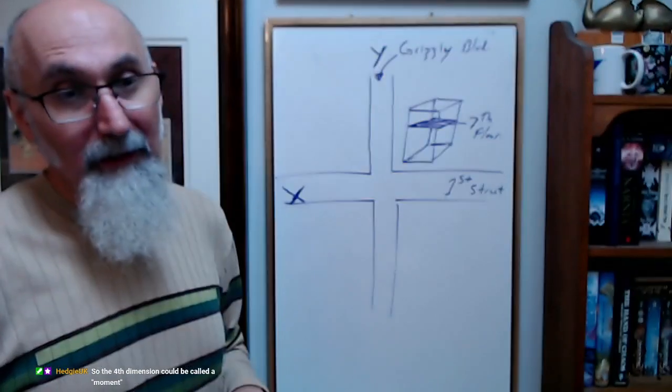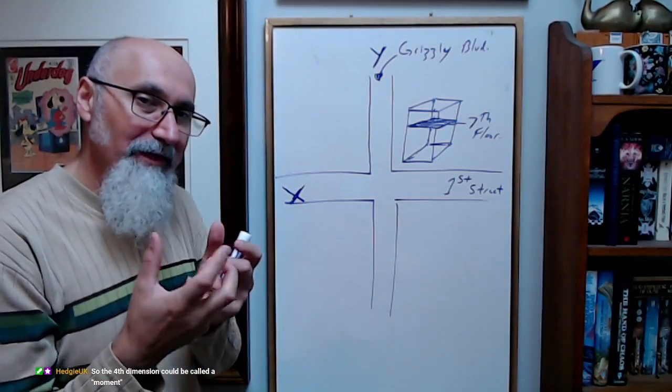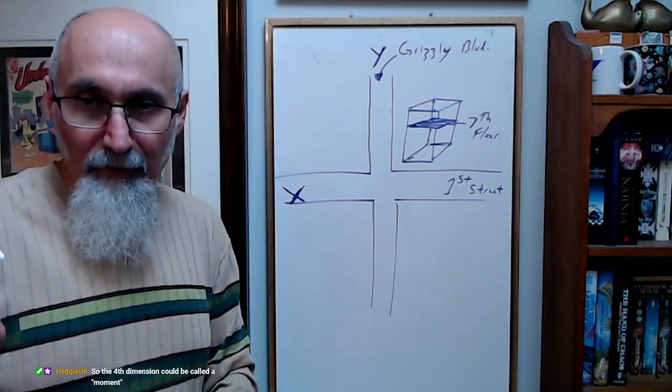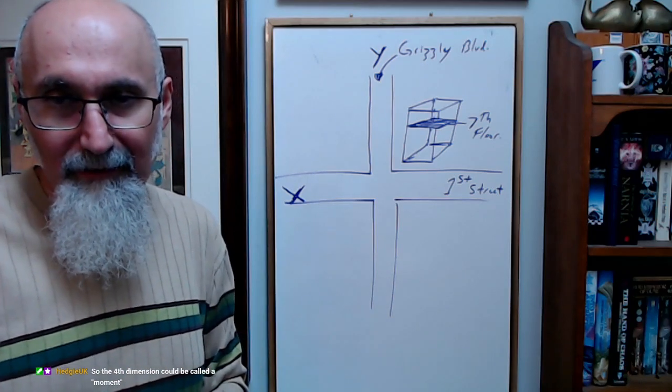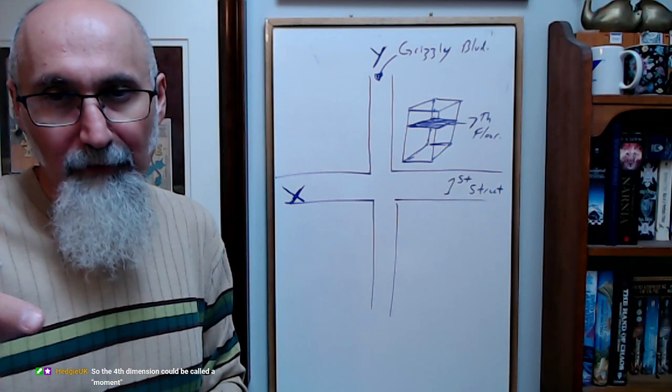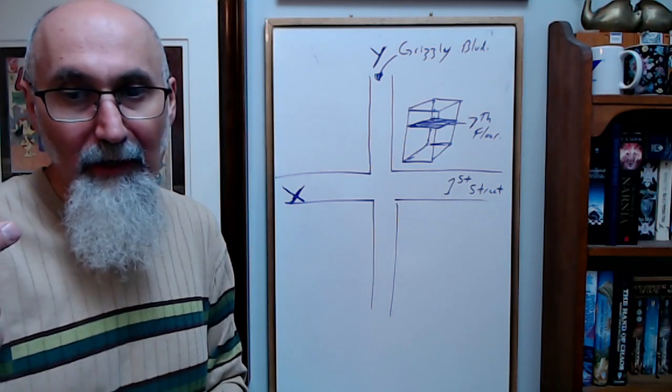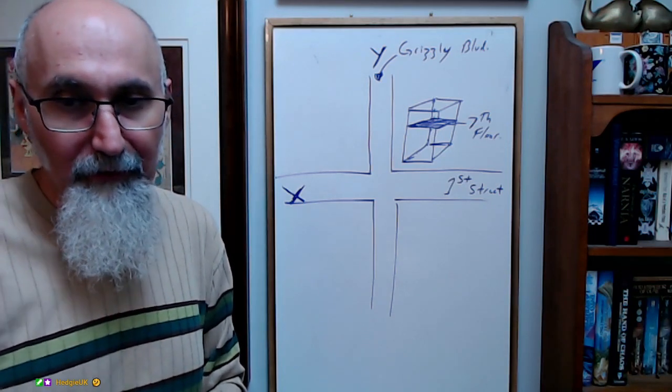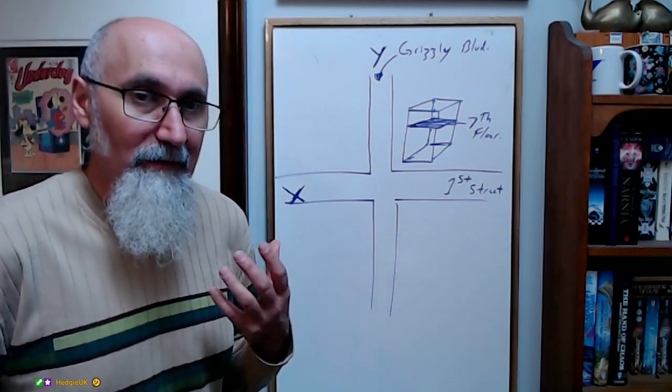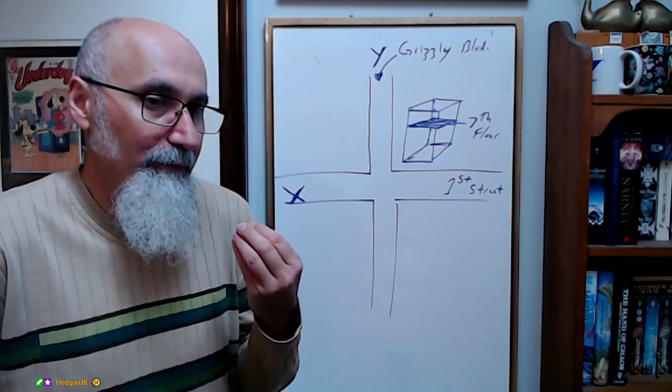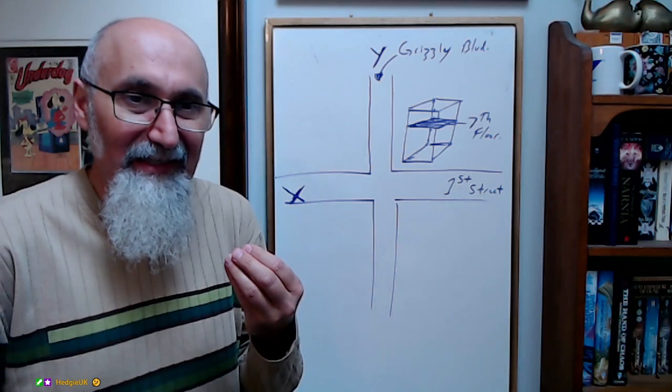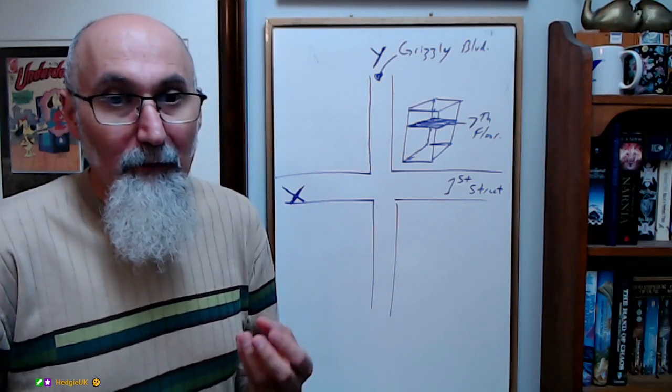There supposedly are other spatial dimensions. Ronnie asked why it's so hard for humans to visualize beyond 3D. It's because we don't have a perception of it. We don't exist in a four-dimensional world.